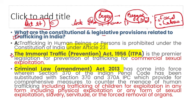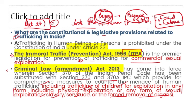Key acts: The Immoral Traffic Prevention Act 1956 was brought to prevent trafficking for commercial sexual exploitation. The Criminal Law Amendment Act introduced Sections 370 and 370A, which give measures to counter human trafficking including trafficking of children for physical exploitation, sexual exploitation, slavery, servitude, or forced removal of organs. In exams, you may be given 2-3 acts and asked which ones deal with trafficking.